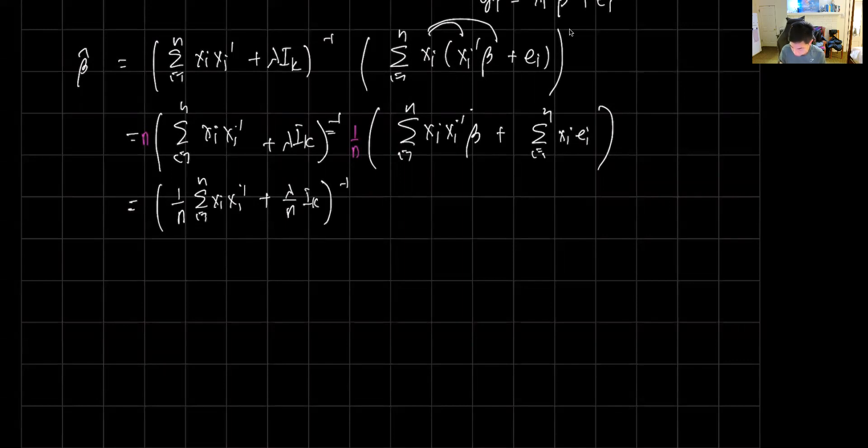Then the 1 over n here you distribute to both sides. You do 1 over n sum i equals 1 to n x i x i prime beta plus 1 over n sum i equals 1 to n x i e i.